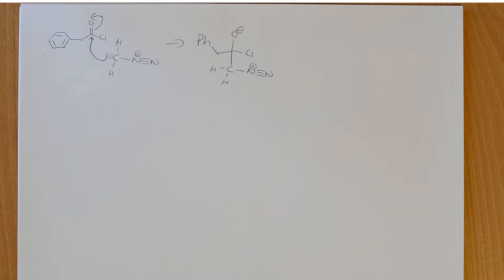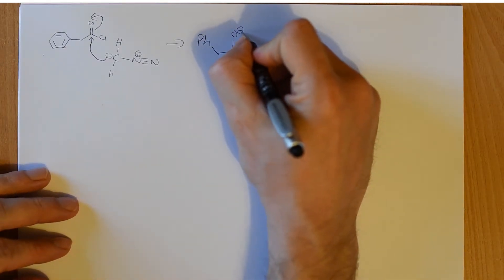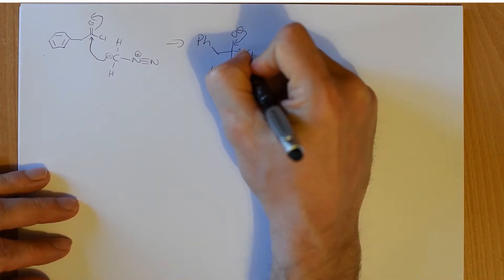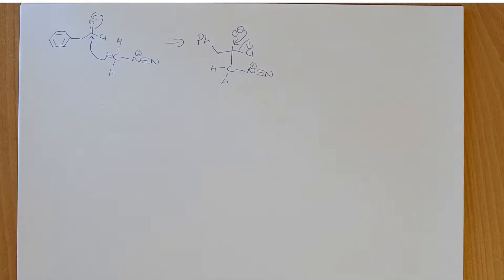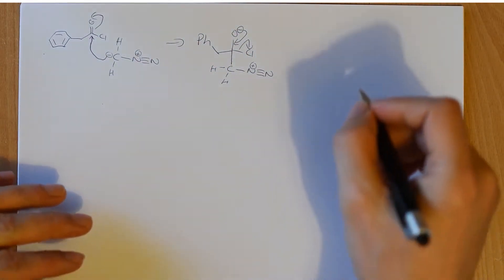As usual, we've got our tetrahedral intermediate, and then we can reform our carbon-oxygen double bond and kick out our leaving group. That's a really familiar bit of chemistry, hopefully.